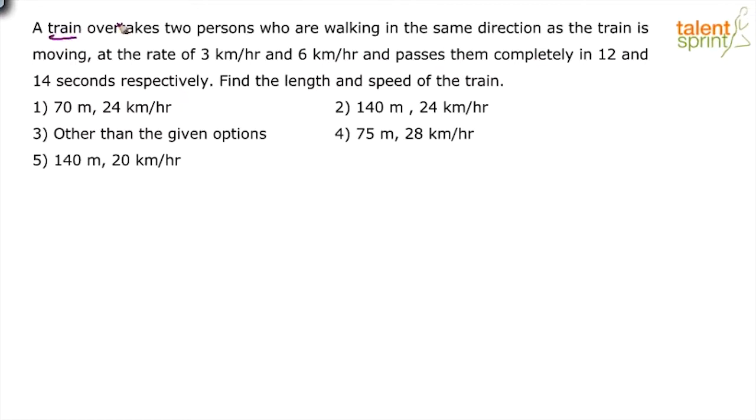So basically there is a train and two persons who are all walking in the same direction as the train is moving. So the two persons and the train are all going in the same direction. What are the speeds of these two persons? 3 km per hour and 6 km per hour.